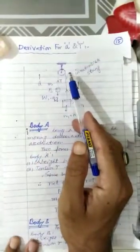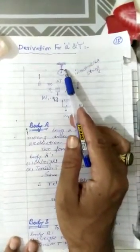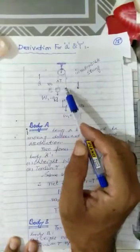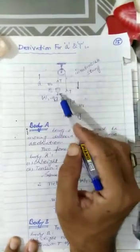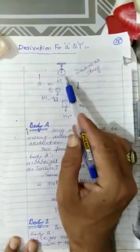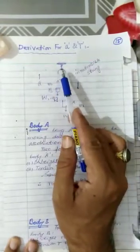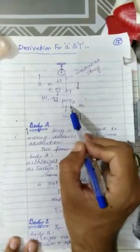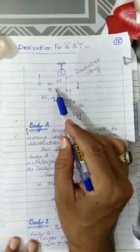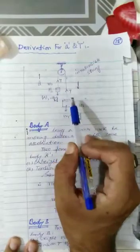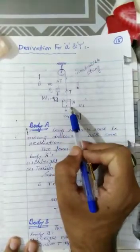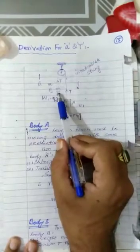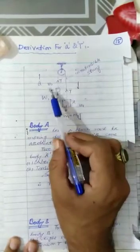Basically we have an Atwood machine in which there is a pulley and a string passing over this pulley, and this pulley is frictionless. One end is attached with body A, second end is attached with body B. Now you can see body A having mass M1, body B having different mass which is smaller than M1, which is M2.